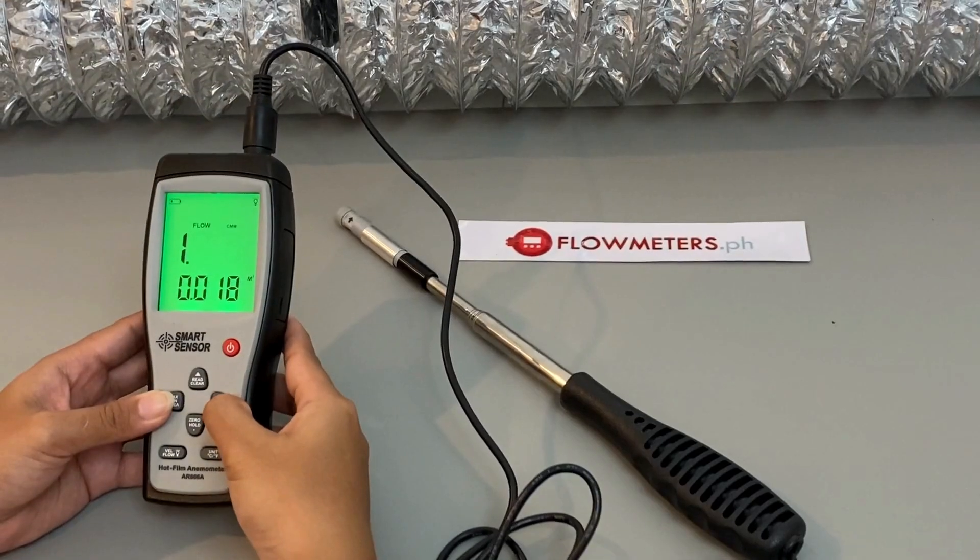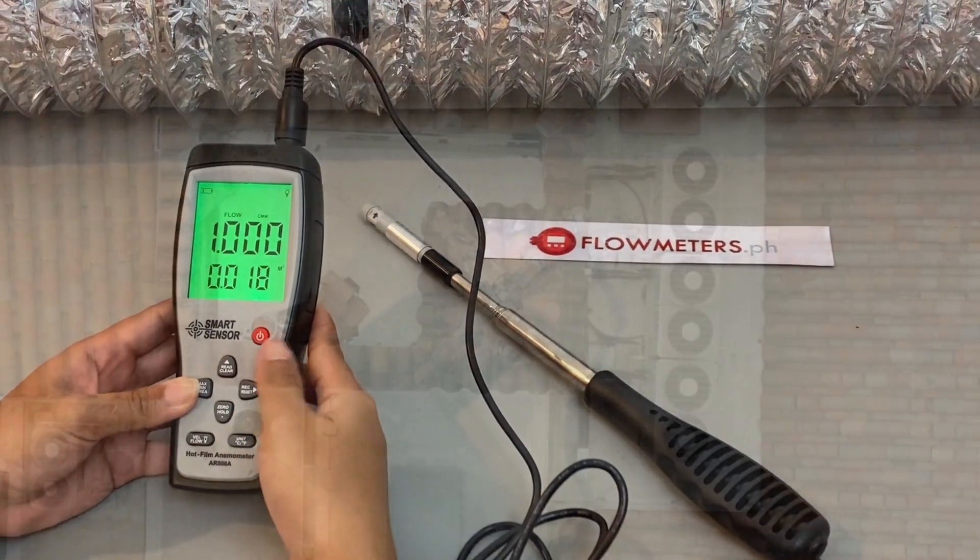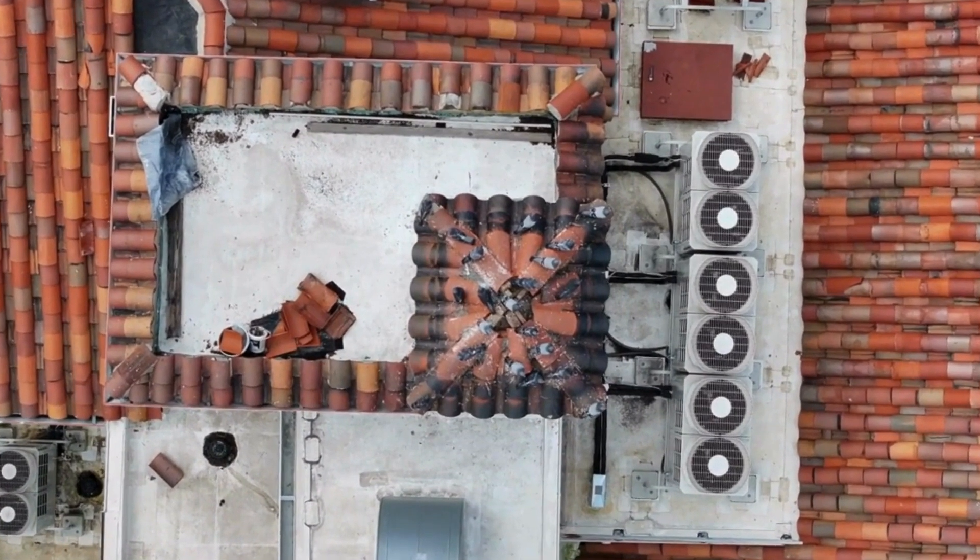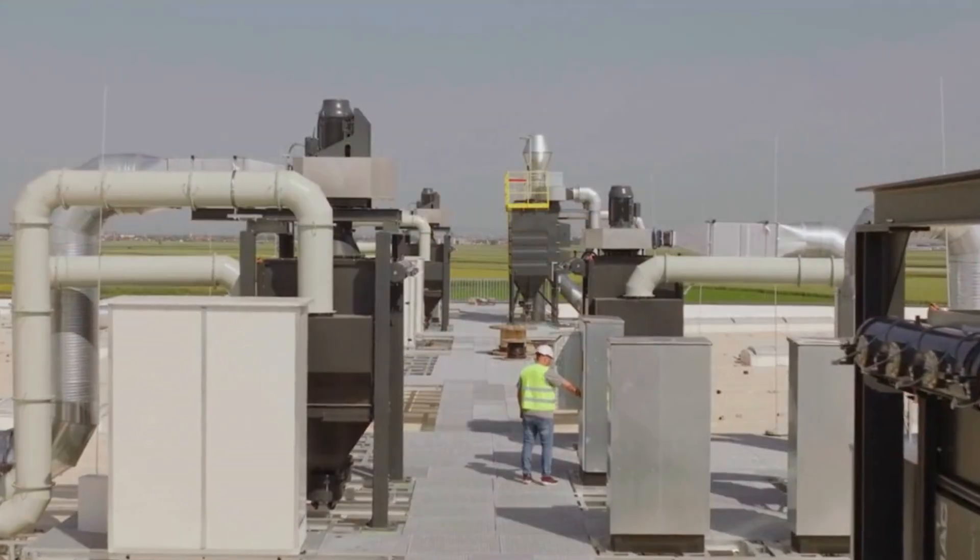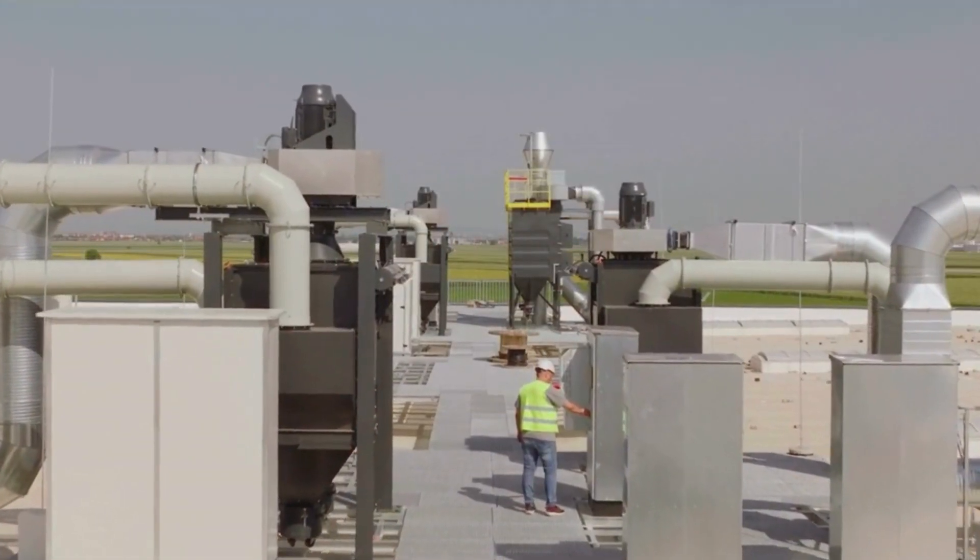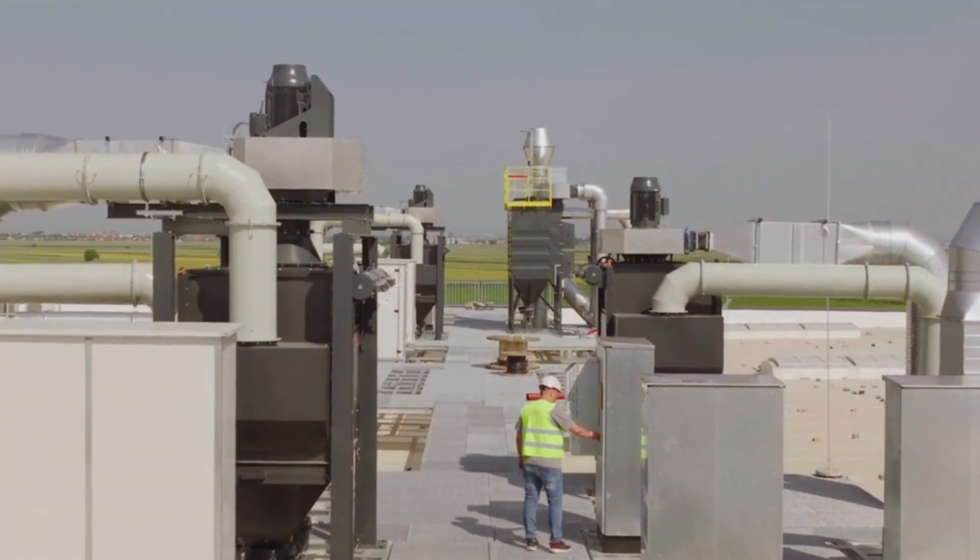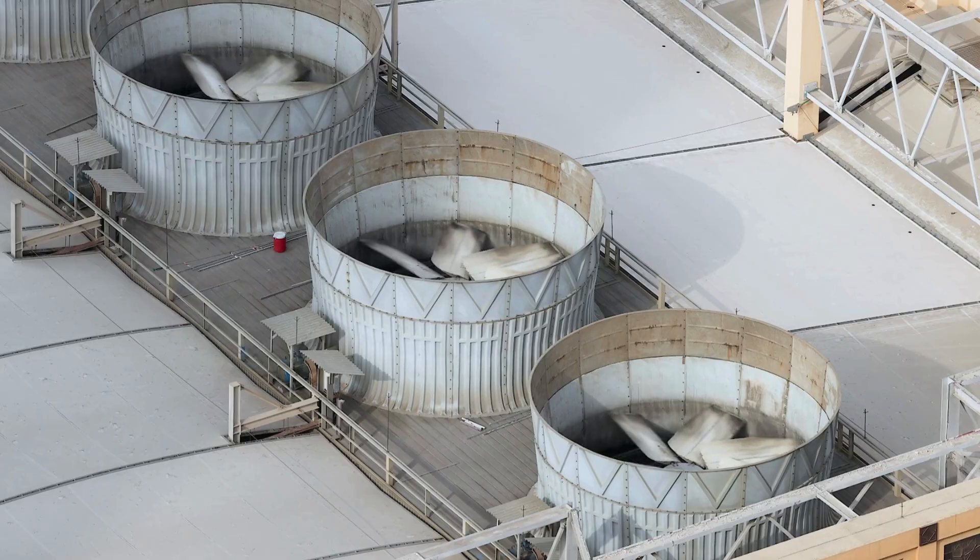Hot wire anemometers are a popular tool for measuring air velocity, particularly in indoor environments. These devices are suited to monitoring airflow around HVAC systems, flow hoods, and exhaust systems.